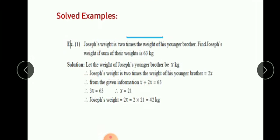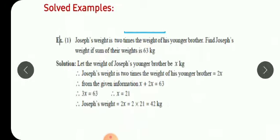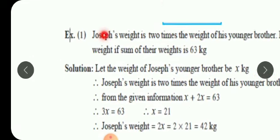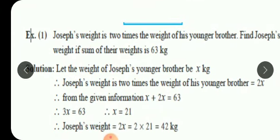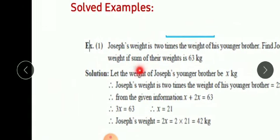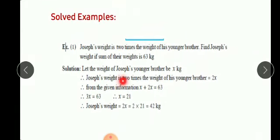Now one more solved example on page number 78. Joseph's weight is 2 times the weight of his younger brother. Let the weight of Joseph's younger brother be x kg, so Joseph's weight is 2x. From the given information, x plus 2x is 63. So 3x is equal to 63, x is equal to 63 divided by 3, which is 21. Therefore Joseph's weight is 2x, which is 2 into 21 equals 42 kg.